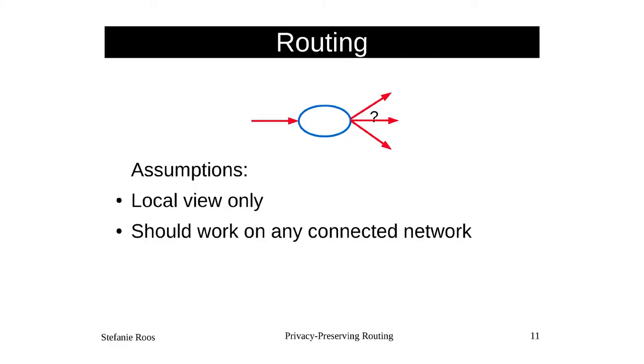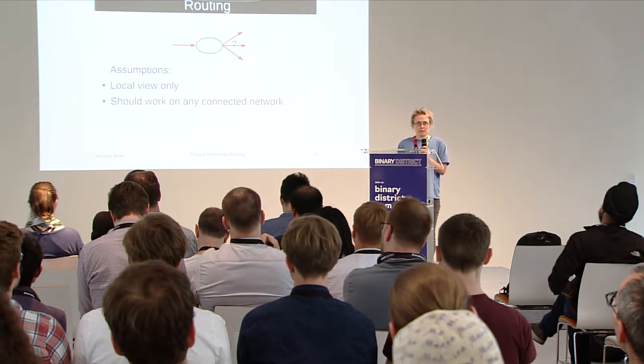We made the assumption that nodes have only a local view — you know your payment channels and your neighbors but you do not know anything about the global network. One reason this is a good assumption is privacy. Especially in the credit network case, a link can mean 'I owe you $10,000,' which is probably something you do not want to make public to everyone.